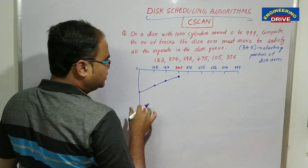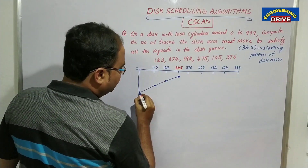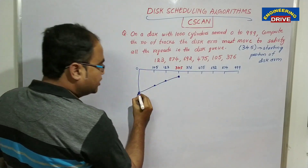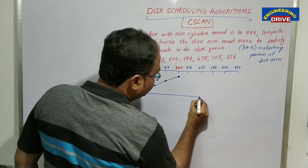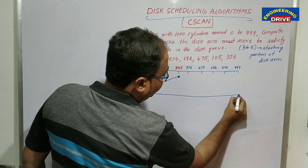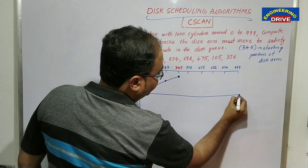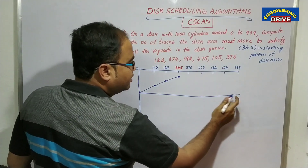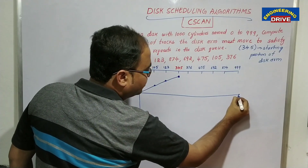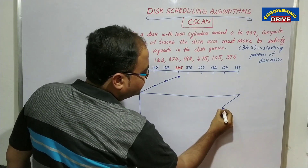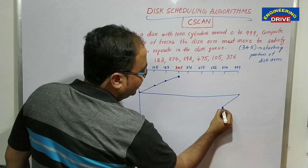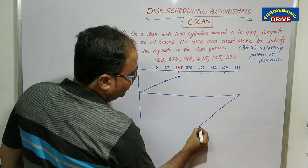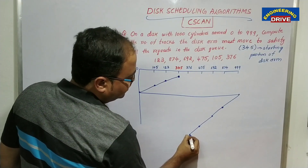What circular scan does, unlike the scan disk scheduling algorithm, is it directly moves to the end position of the cylinder — that is cylinder 999. From cylinder 999, it scans the remaining elements from the right side. So next it serves 874, then 692, then 475, and last 376.